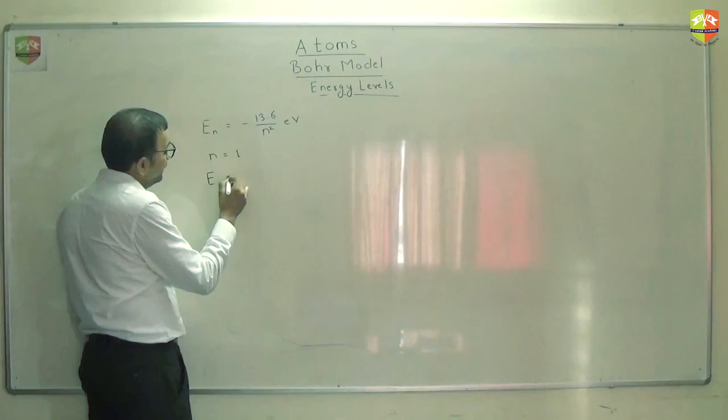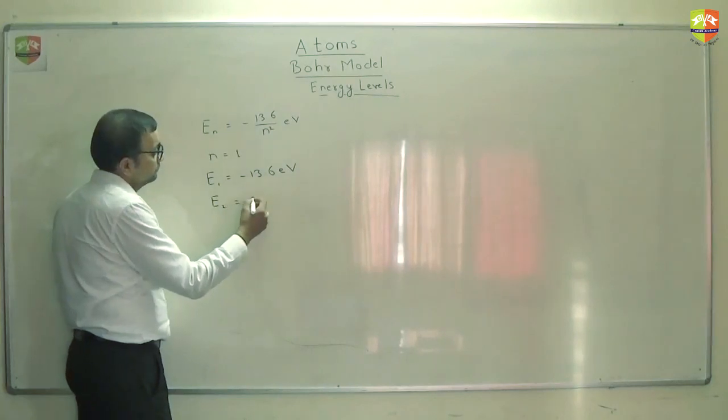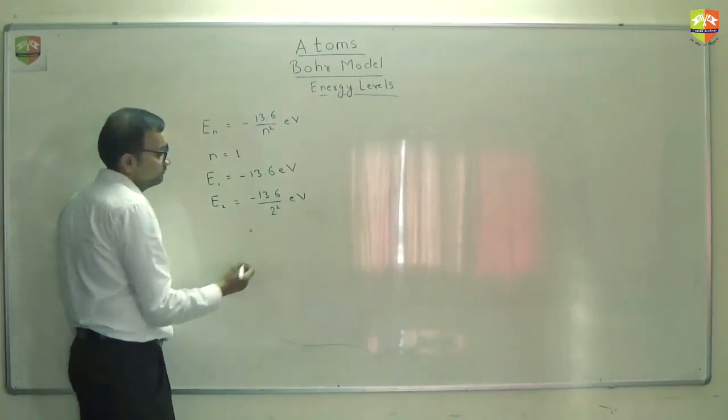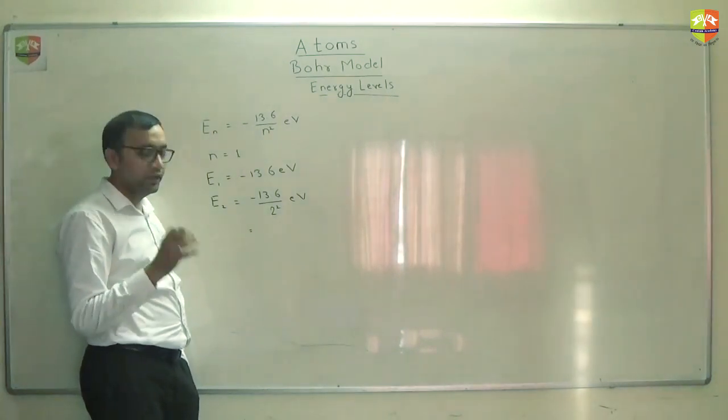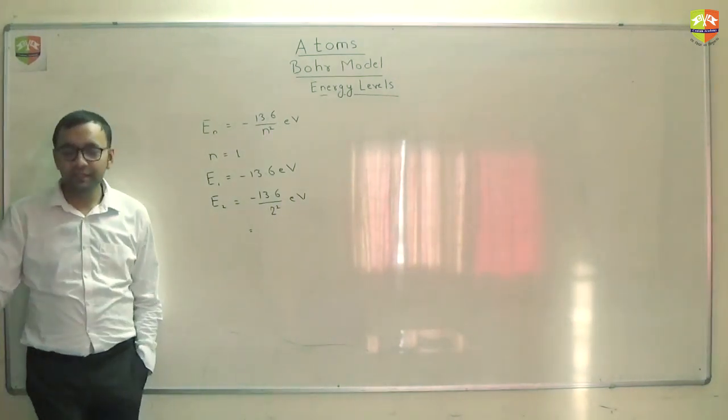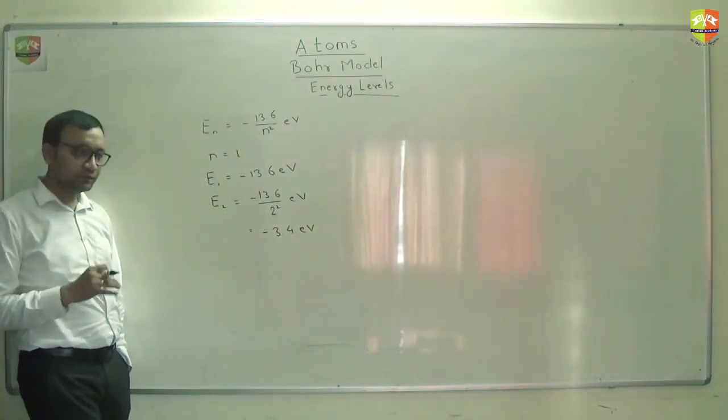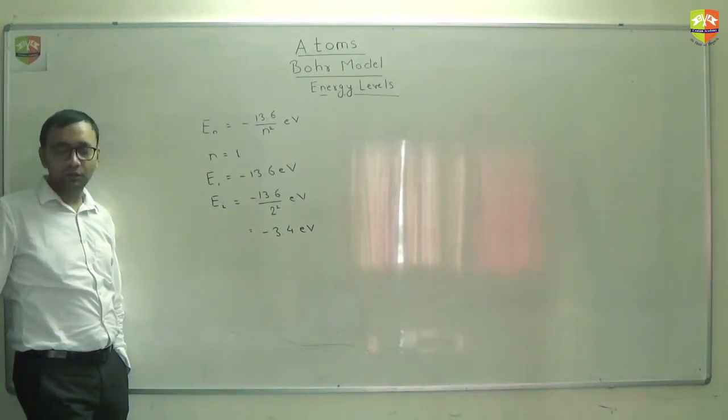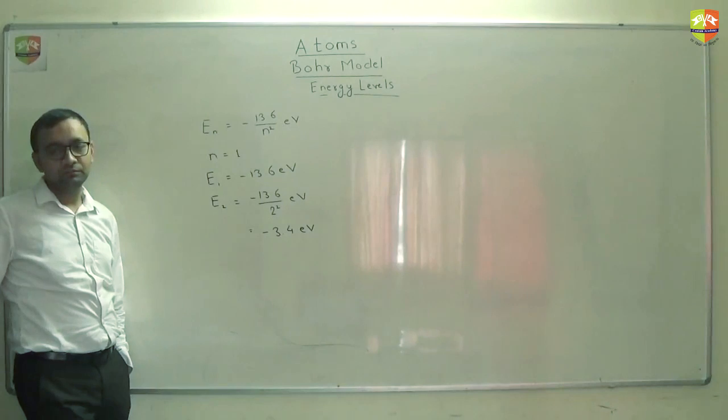So E1 is minus of 13.6 eV. E2 is minus 13.6 divided by 2 square electron volt. How much is this? Could you calculate how much is this? Exact, exact, exact. Why you guys are so lazy? Why can't you just calculate? Minus 3.4 electron volt. If you shy away from calculation, you will be completely shattered when you write the JEE. They test you on calculation also. And specially these chapters which are easy, they will put some difficult calculations.